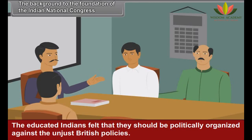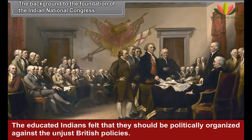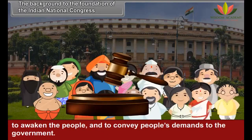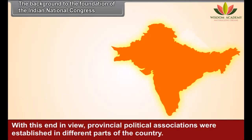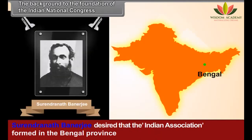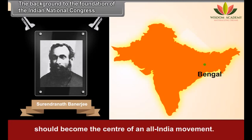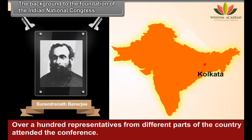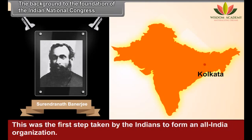The educated Indians felt that they should be politically organized against unjust British policies. Their objectives were to get justice through lawful means, to awaken the people, and to convey people's demands to the government. With this end in view, provincial political associations were established in different parts of the country. Surendranath Banerjee desired that the Indian Association formed in Bengal should become the center of an all-India movement. In 1883, he organized an all-India National Conference at Kolkata, attended by over a hundred representatives from different parts of the country. This was the first step taken by Indians to form an all-India organization.